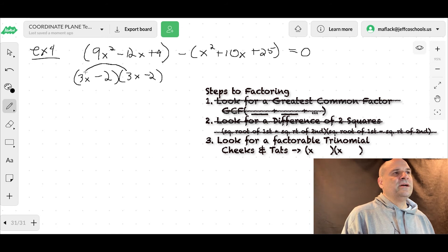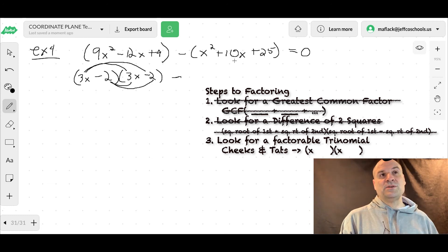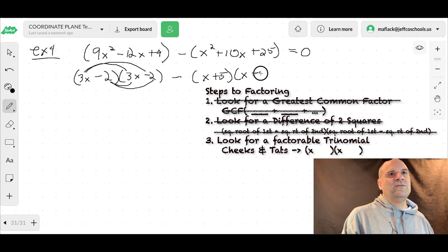say 3x minus 2 times 3x minus 2. When you FOIL that out, you get 9x squared, negative 6x, negative 6x is negative 12x, and then negative 2 times negative 2 is positive 4. So that's a square trinomial. This is a square trinomial. Well, we knew that because 10 divided by 2 squared is 25. Okay, so how do we factor that? X plus 5, X plus 5 equals 0.